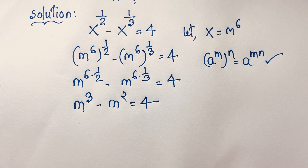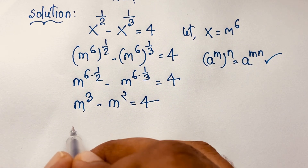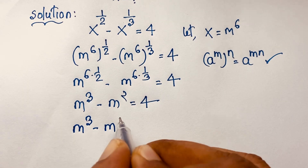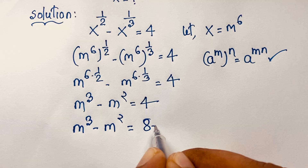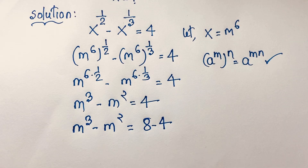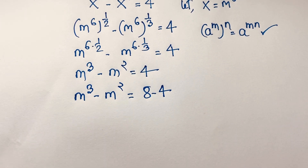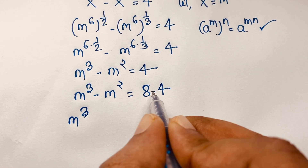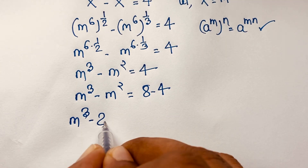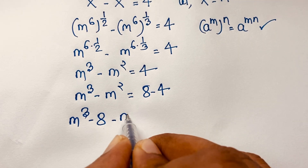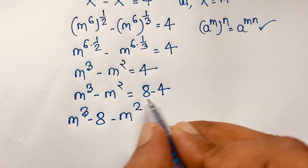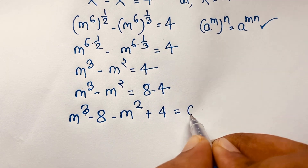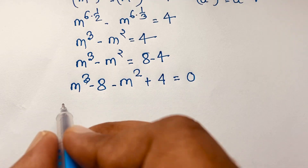Now we will find a nice cubic equation. This is m to the power 3 minus m to the power 2. We note that 4 equals 8 minus 4, so 8 minus 4 equals 4. Moving 8 to this side gives negative 8, and this is negative m squared. Moving negative 4 to this side gives positive 4, so the equation becomes m cubed minus 8 minus m squared plus 4 equals 0.